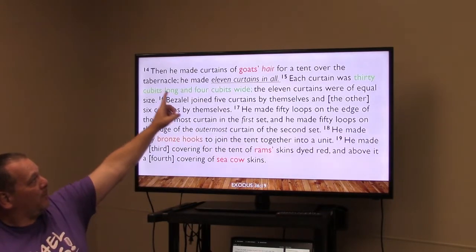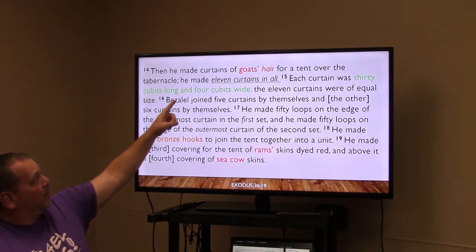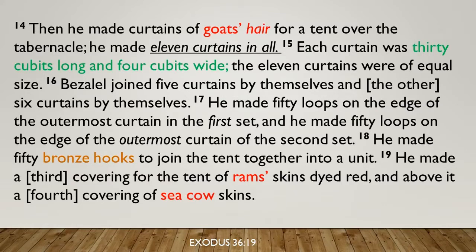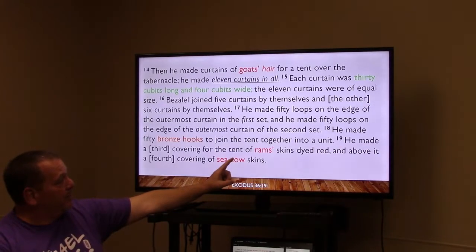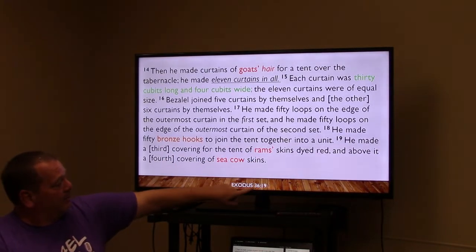He made curtains of goat hair — 11 curtains total, each 30 by 4 cubits, with Bezalel joining five and six to make eleven. These used 50 loops per side, but with bronze hooks — not gold. He also made a third covering of ram skins dyed red, and a covering of sea cow skins.